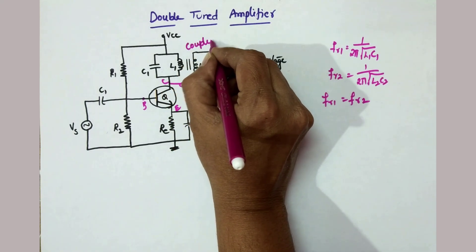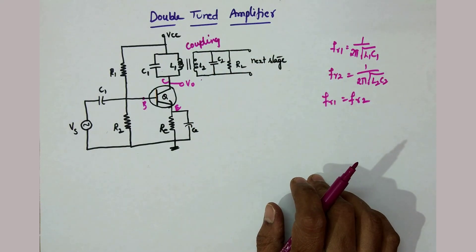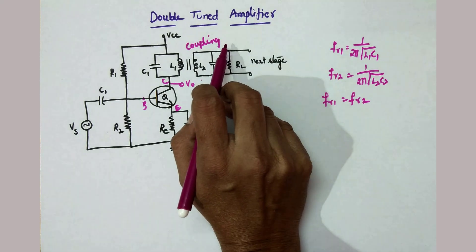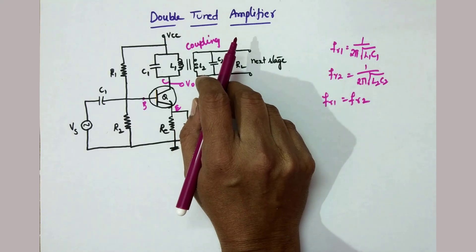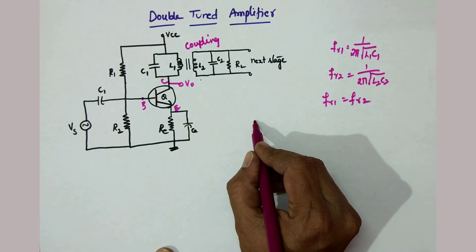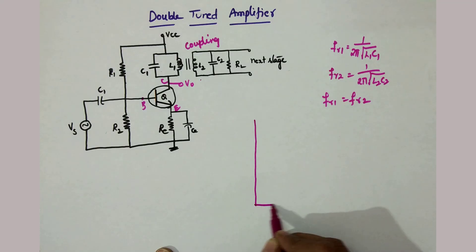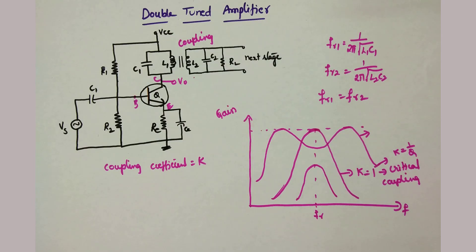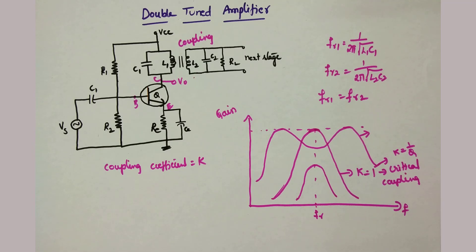The frequency response of double tuned amplifiers completely depends on the coupling, and I will draw the frequency response based on the coupling. The response for k = 1 is considered critical coupling; from the analysis we know that critical coupling is the case for k = 1/Q. If we see the response for critical coupling, it has broader bandwidth, the peak is not sharp, and it has a flatter peak.